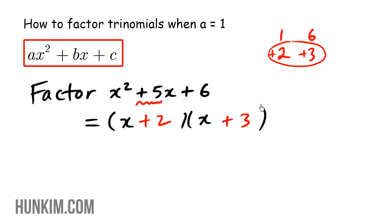We can verify this by using FOIL. x times x is x squared. As for the outside, x times positive three is going to be positive three x. And the inside is going to be positive two x, which adds to be a total of positive five x. And finally, the last is going to be positive two times positive three, indeed is positive six.